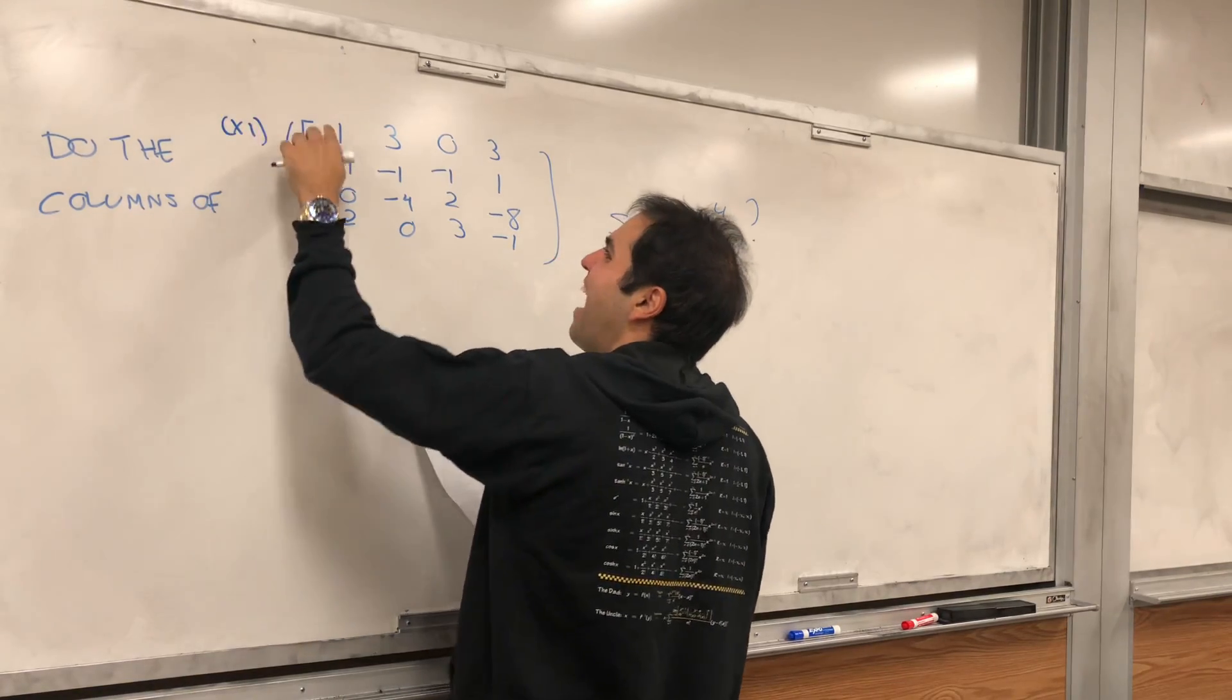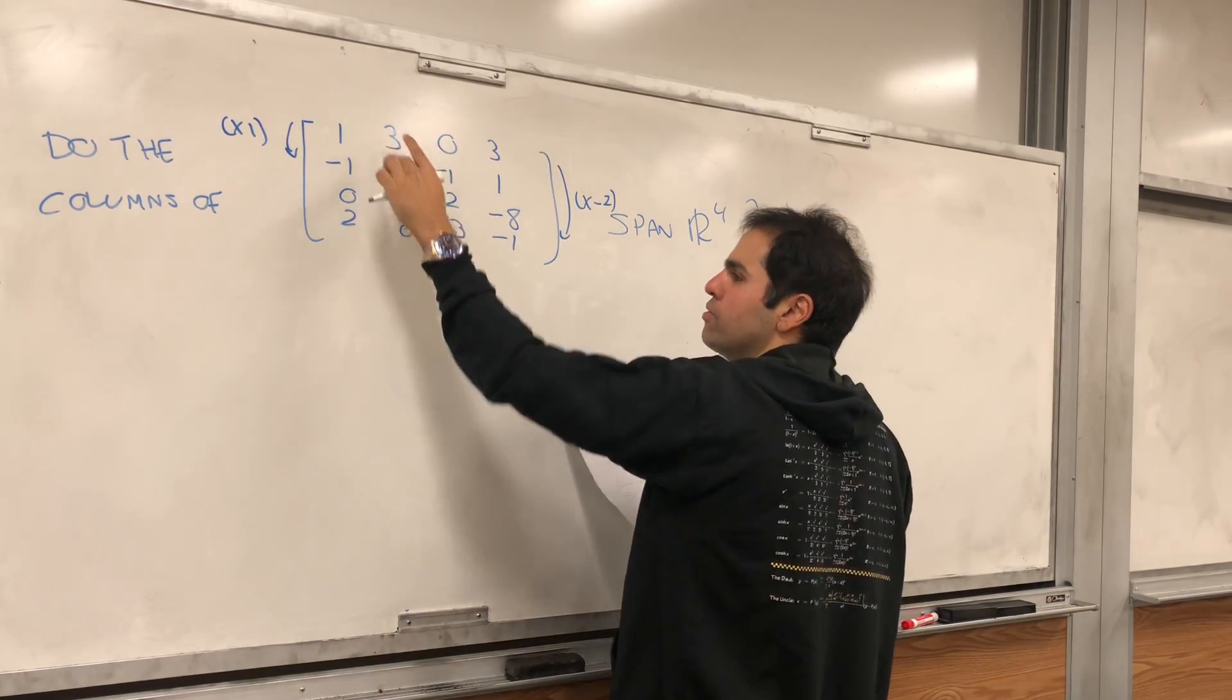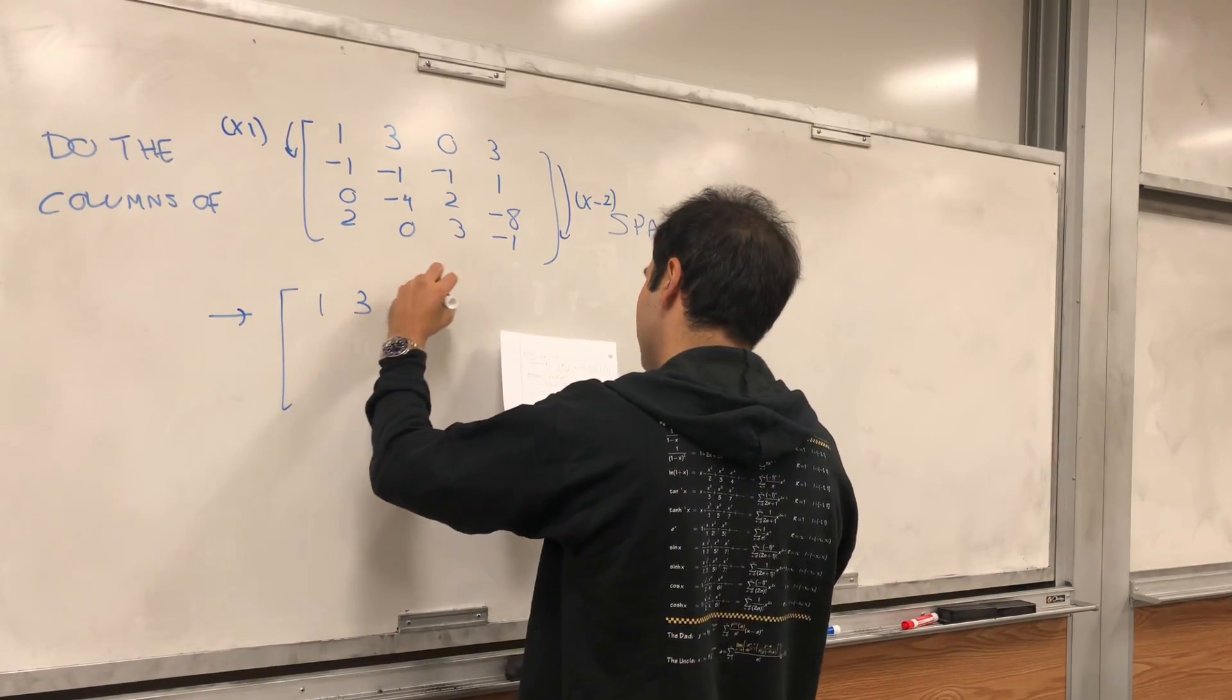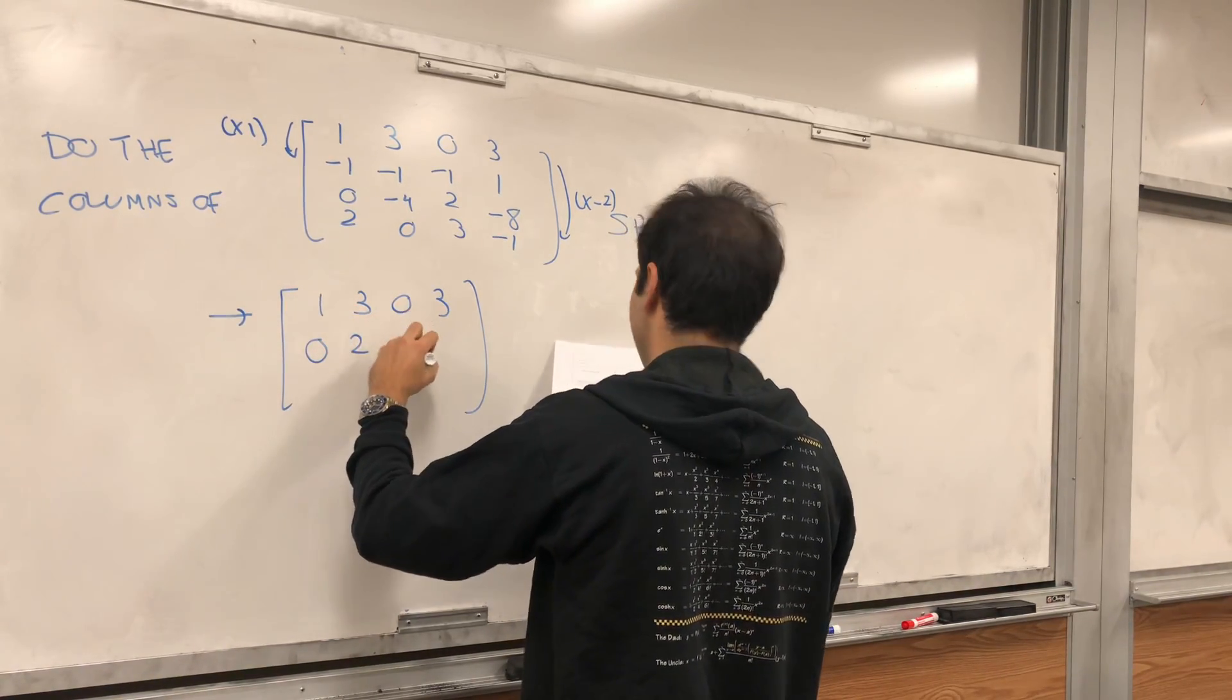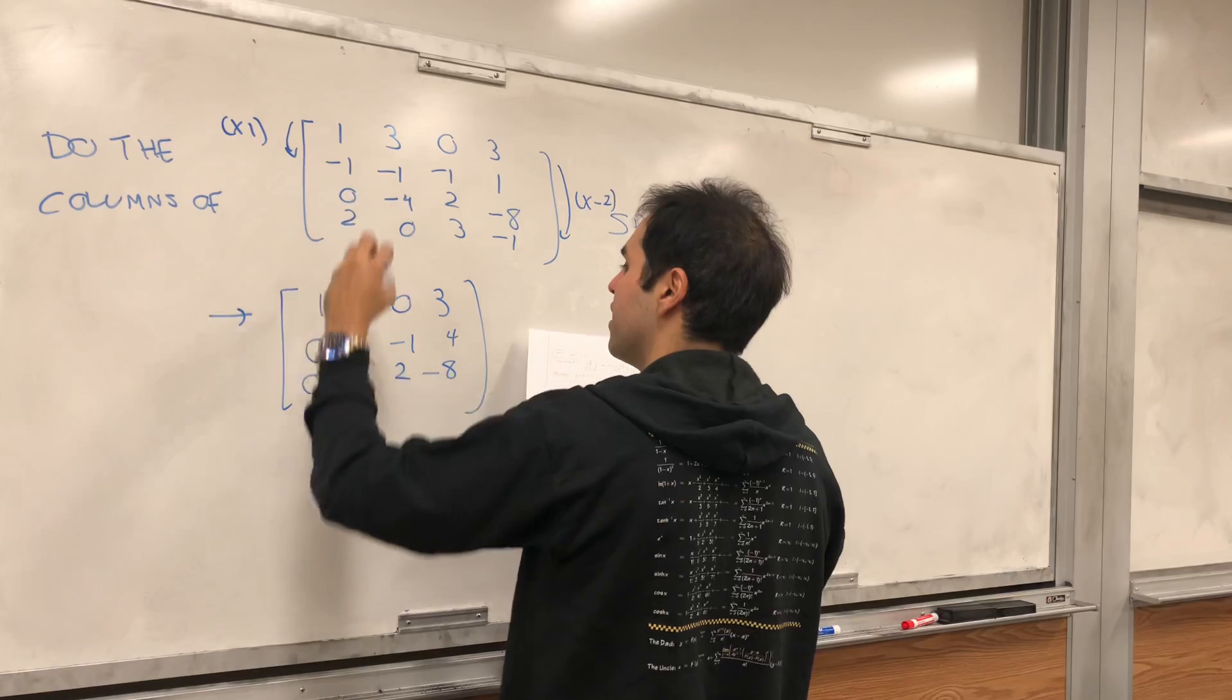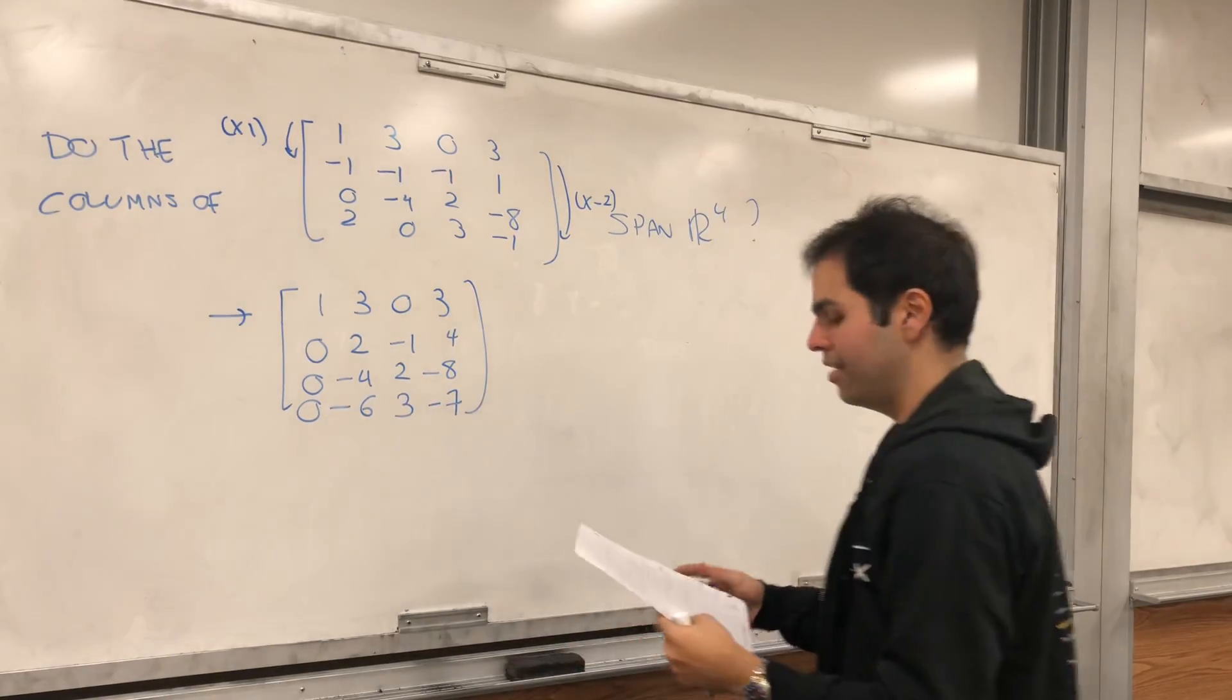All right, so let's add this row to this row to get zero, and let's subtract the first row from the second row, so twice that, and then what you get is one, three, zero, three, and then let's see. So, zero, two, minus one, four, and then zero, minus four, two, minus eight, and then zero, minus six, three, and then minus seven.